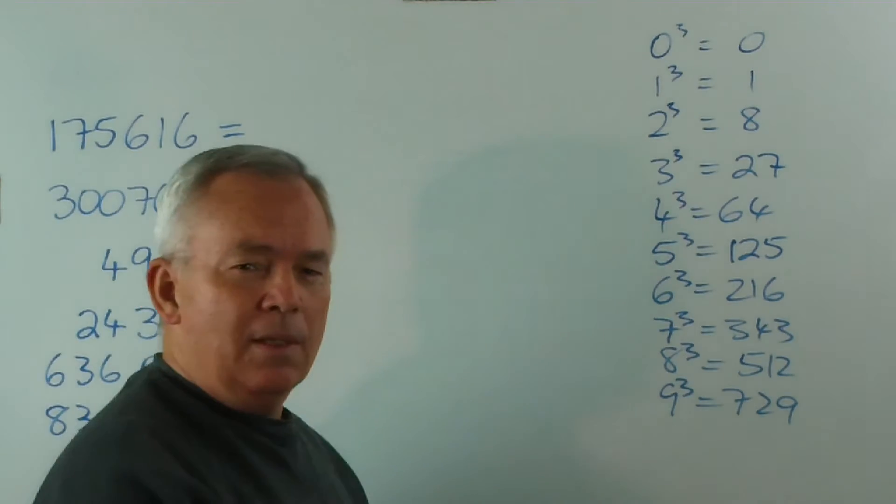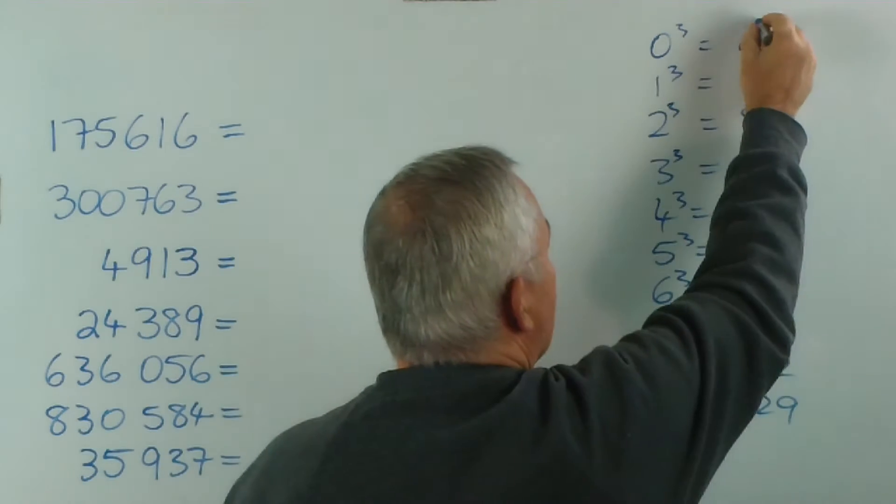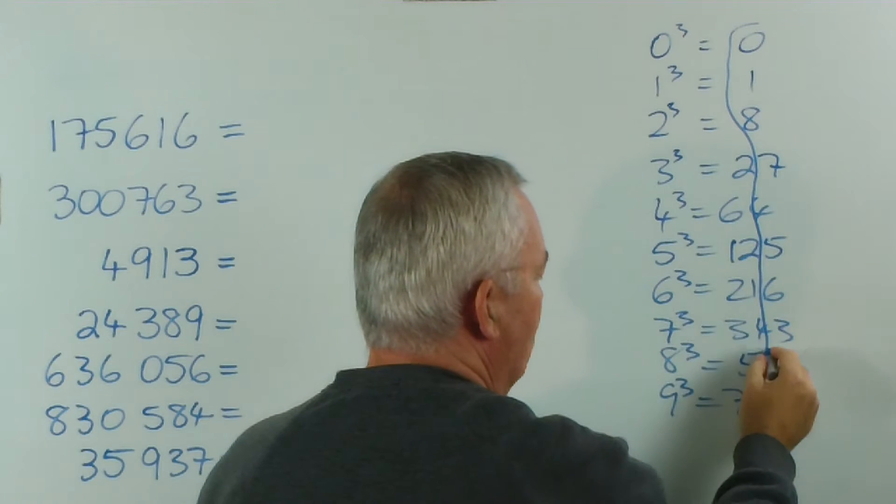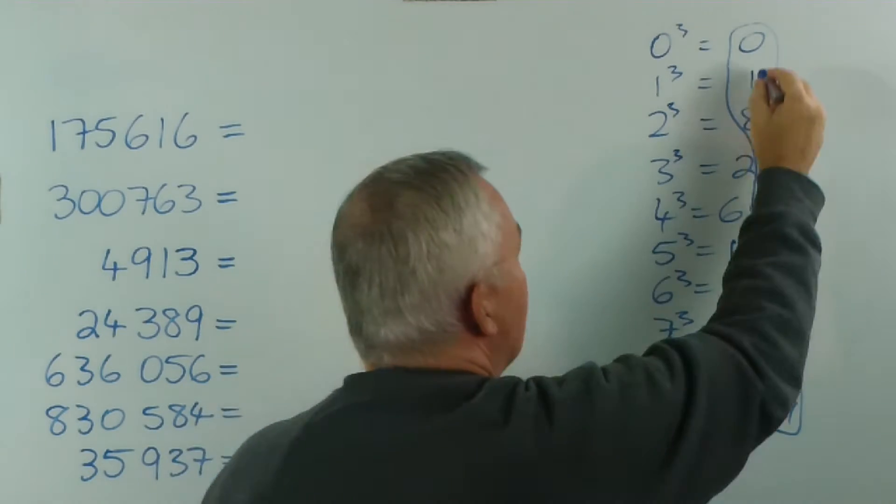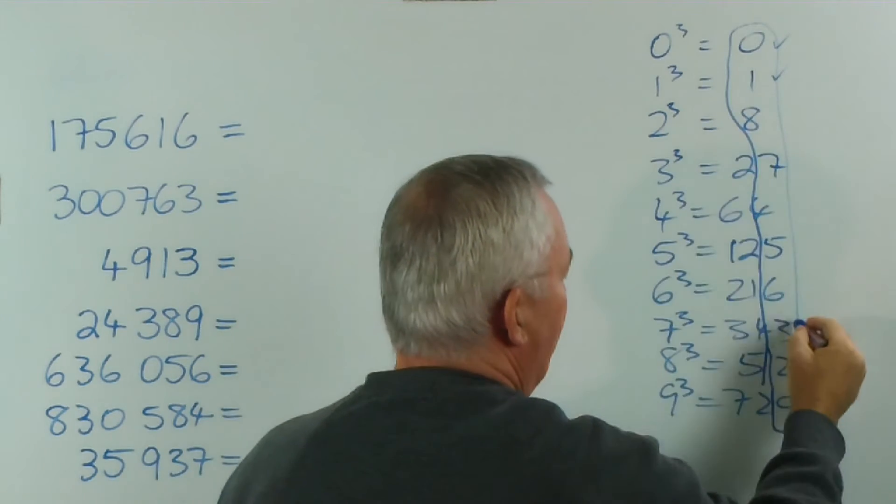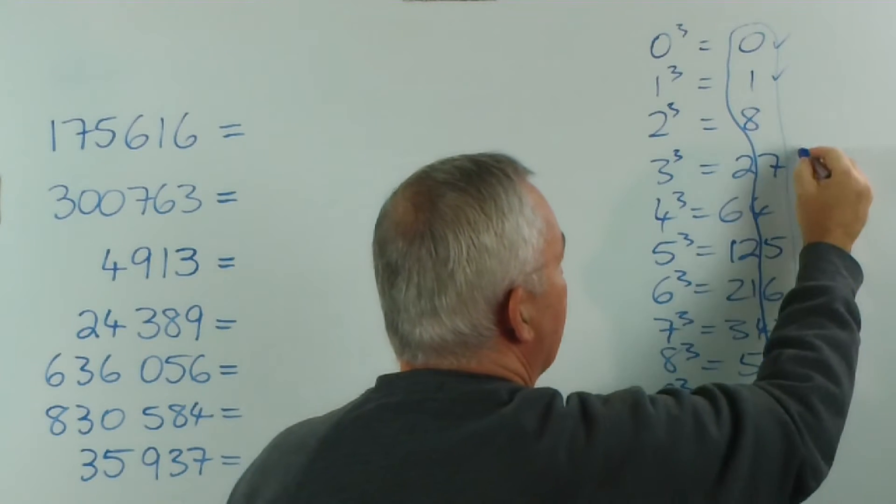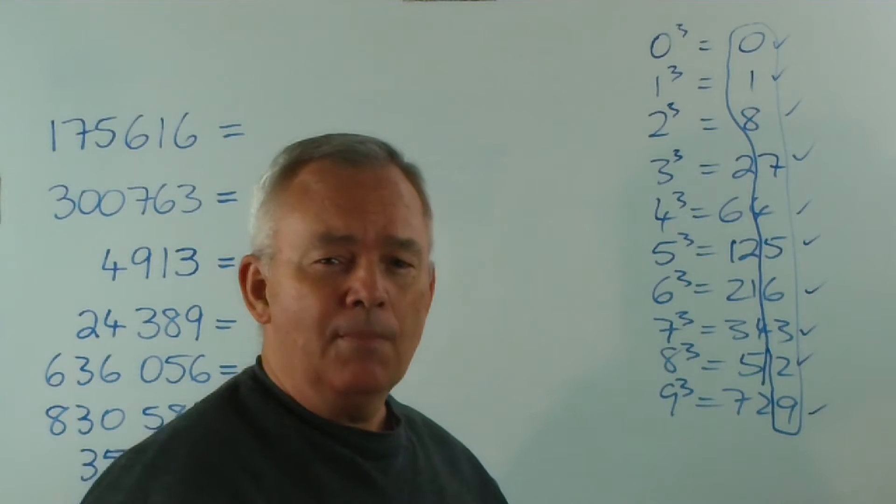Now, I want you to notice something rather interesting. If you look at the last digit, I know this is not the neatest thing in the world, I want you to notice we have a zero, a one, a two, a three, a four, a five, a six, a seven, an eight and a nine. They are all different, every one of them.